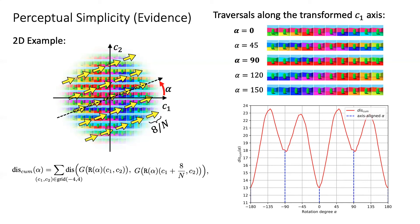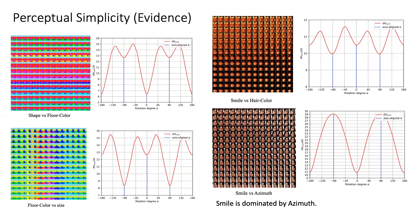This is an indication that interpretable variations are generally simpler than other random variations. And this phenomenon also holds for other attributes and other datasets.